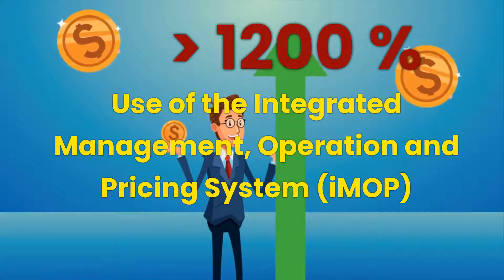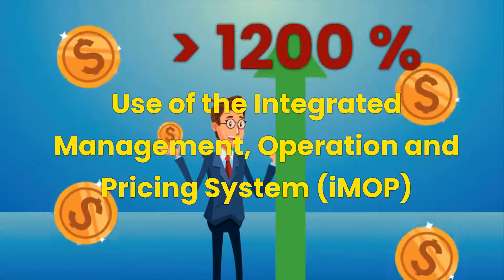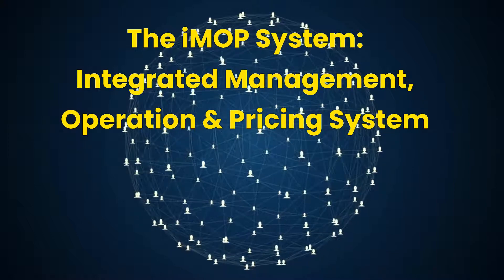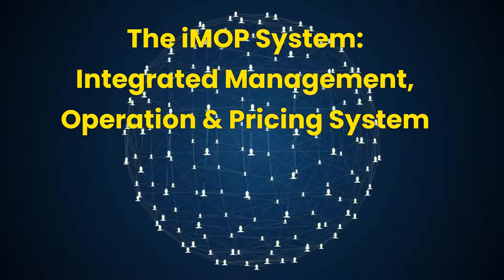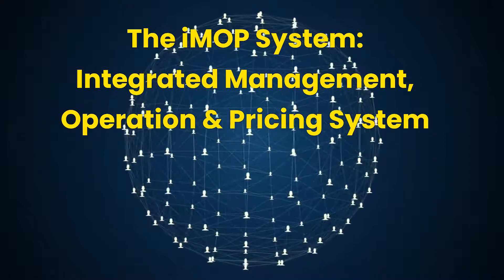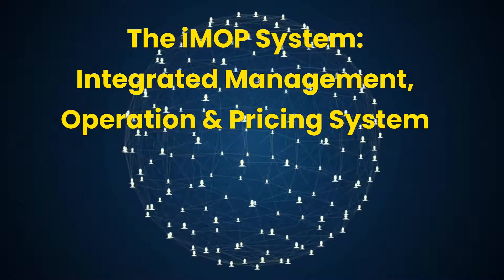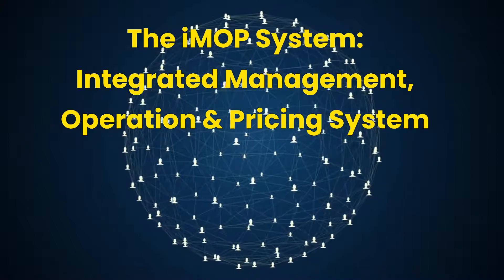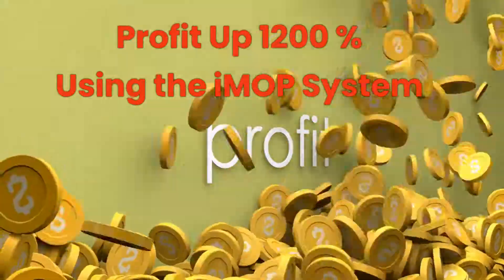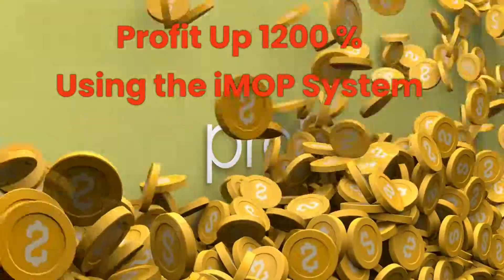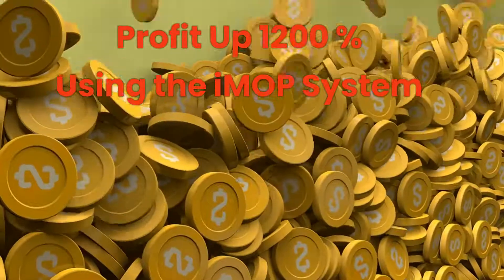Increase your Airbnb profits by more than 1200 percent. In this video we introduce you to the Integrated Management Operation and Pricing System, or the IMOP system — a very important subject on how to start a short-term rental management business. We will use a reasonably realistic example with various scenarios to illustrate how to increase the profits of a hosting service by 1200 percent or higher using the IMOP system.